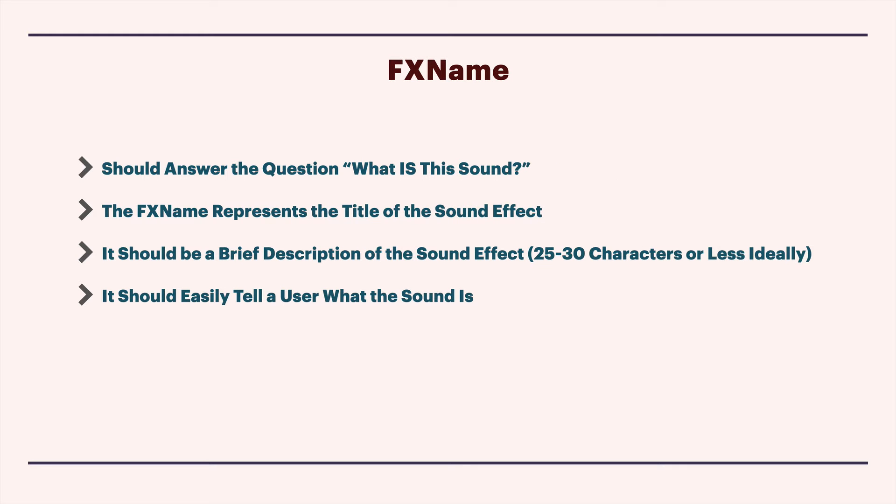The effects name is meant to answer the question: what is the sound? It's sort of like the title of the sound effect - a brief description of the sound, usually 25 to 30 characters or less. It's not meant to replace the description field. You're probably still going to want to write a description into the broadcast wave metadata field or in SoundMiner metadata or BWAV header - you'll want to put a longer description of the sound somewhere else. But the file name itself should contain some semblance of what the sound file is, so that simply looking at the file name tells you what the sound is.